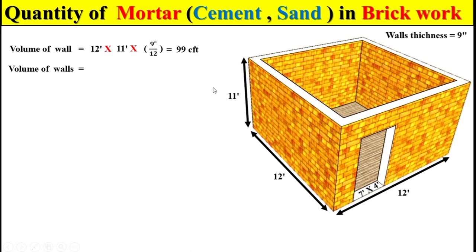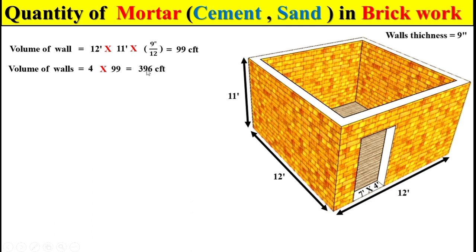To calculate the total quantity of brickwork for all four walls, we multiply by four, since the total number of walls is four. Multiplying four by the volume of one wall gives us the total quantity of brickwork. From this total volume, we then subtract the total volume of the door.